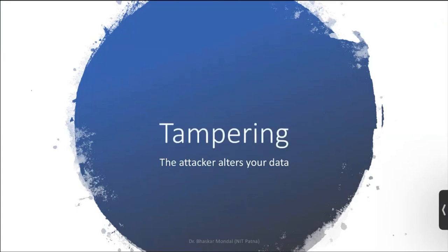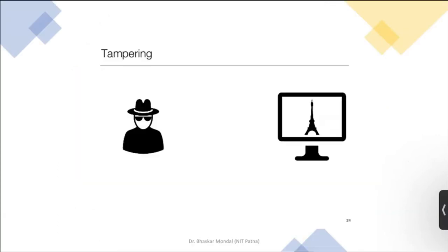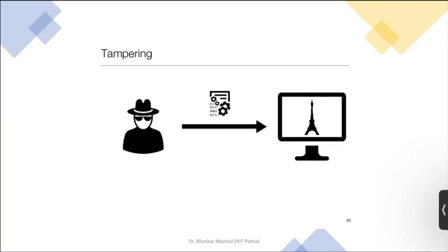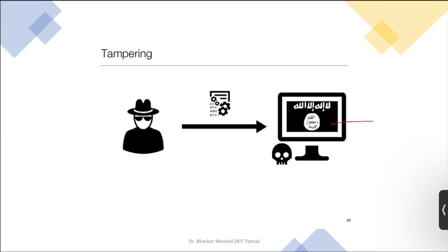Then tampering — the attacker alters your data. An attacker sends some malicious code to a victim's PC, and the data the user is using can be modified or encrypted — it can be something like a ransomware kind of thing.